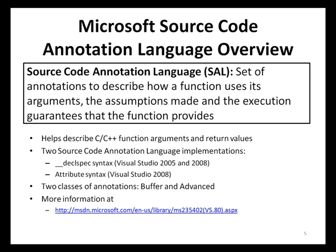Buffer annotations provide information on how functions will use pointer arguments, whereas advanced annotations provide additional information about functions that are not expressible by buffer annotations. We will discuss each of these types of annotations in more detail and see how annotations can be used to improve the security of applications built using the guidance, process, and tools of the Microsoft SDL.